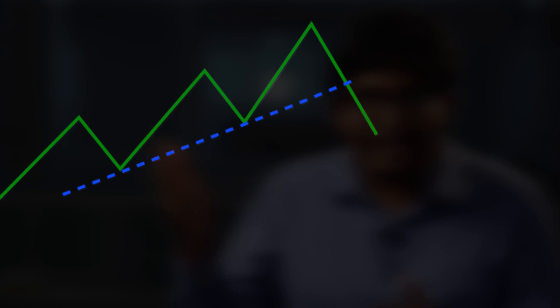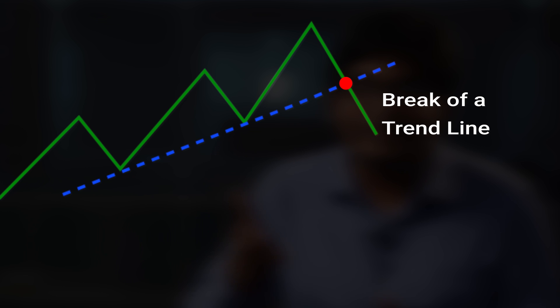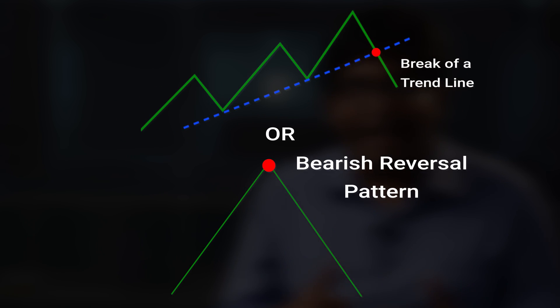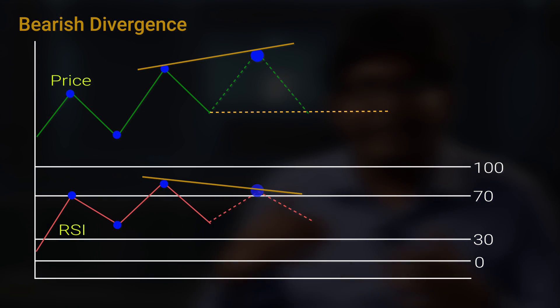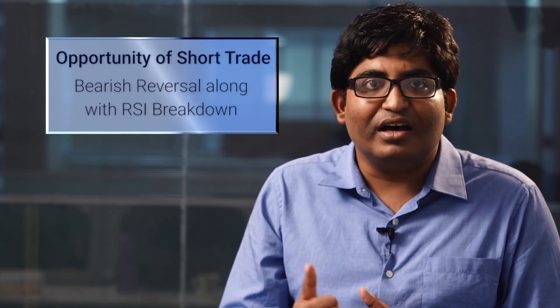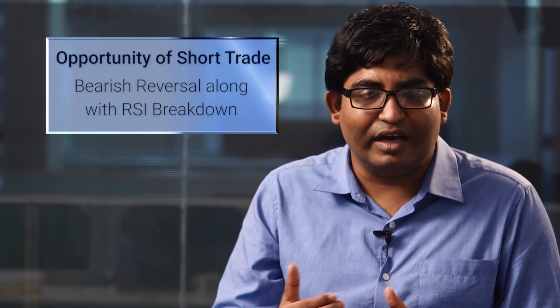In such a scenario, if there is a break of the uptrend line and prices start moving down, or there is a bearish reversal pattern like a shooting star, bearish engulfing pattern, or head and shoulders — and if we see that bearish reversal pattern simultaneously with the RSI falling and eventually a breakdown — we can take a short trade on the stock.